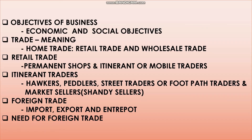In today's class, we have learnt about objectives of business, trade, and types of trade — home trade and foreign trade. Under home trade we learnt retail and wholesale trade. Under retail trade we learnt about permanent shops and itinerant traders — hawkers, peddlers, street traders, and market sellers. In foreign trade, we learnt three types: import, export, and entrepot. Finally, we learnt about the need for foreign trade.